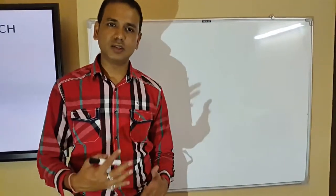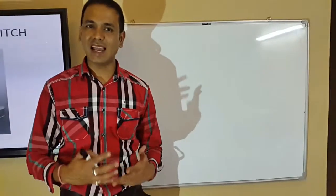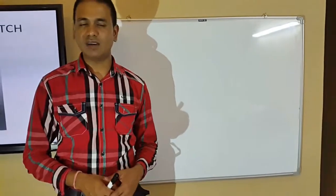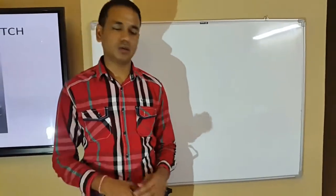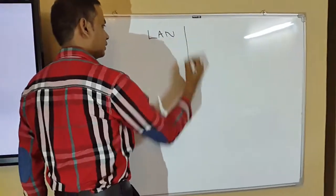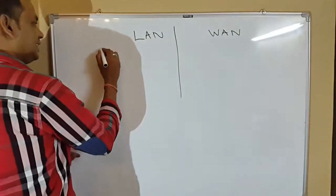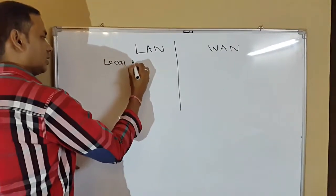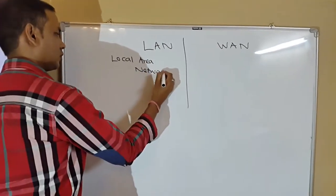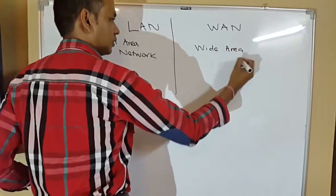Before I continue on IP addressing, I will explain what is the difference between a LAN and a WAN, and the different functions of different networking devices like a switch and router. LAN is local area network, whereas WAN is wide area network.